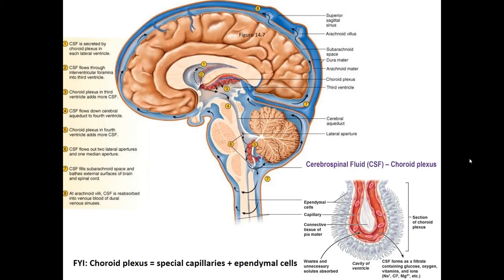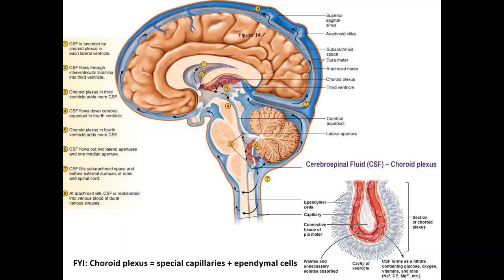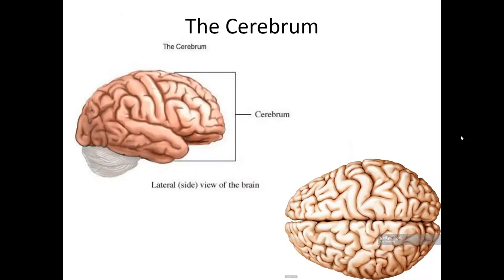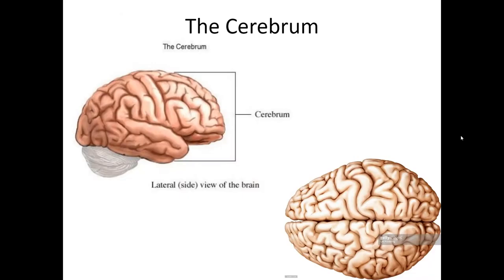While the actual flow of CSF is quite complex, filtration occurs at the center of the brain and the fluid flows through spaces called sinuses, bathing the brain in filtered fluid created for the sole function of providing nourishment to brain tissues. Now let's start taking a look at the actual parts of the brain.